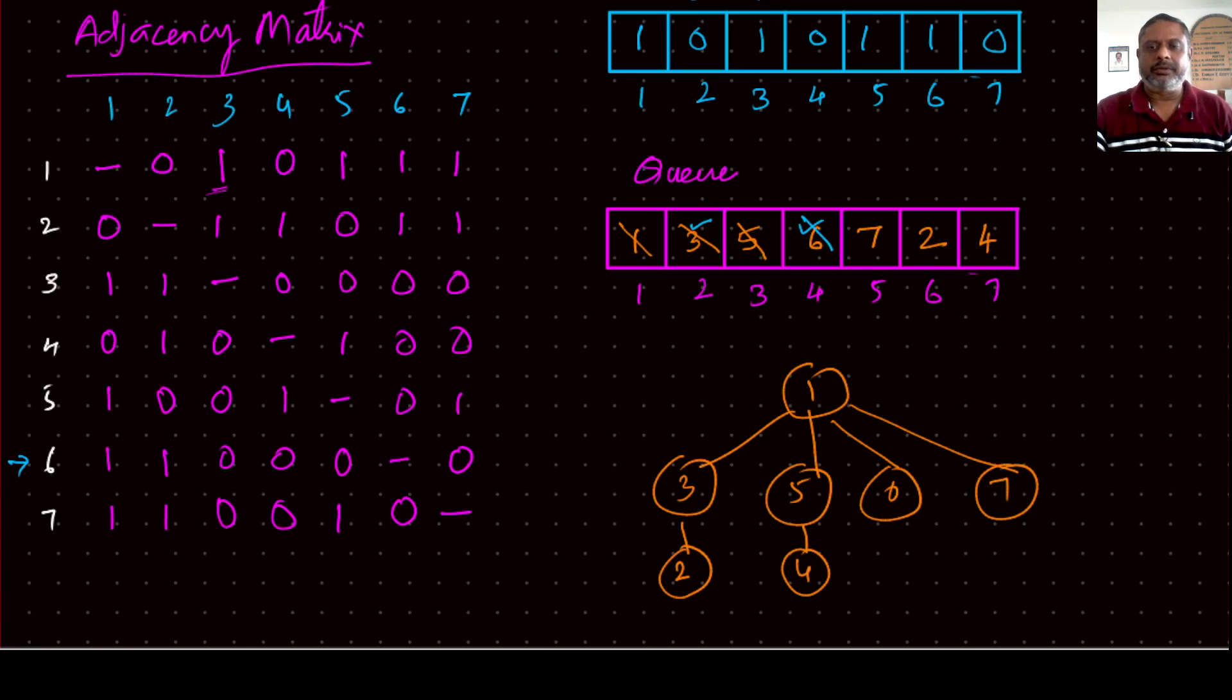Then on the queue is seven. Okay, go to seven. One, two and five. One is over, two is there on the queue, five is also visited, therefore nothing to add. So seven is over, so seven's work is also over, say seven completed.